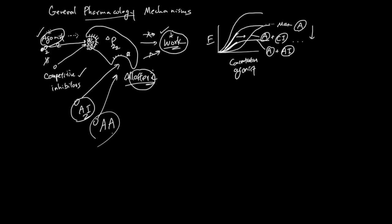The opposite — an allosteric activator — can activate this protein to do more than its normal maximum, increasing the effect beyond agonist alone. So if you administer agonist plus allosteric activator, you get a boost in this protein's maximum work potential.